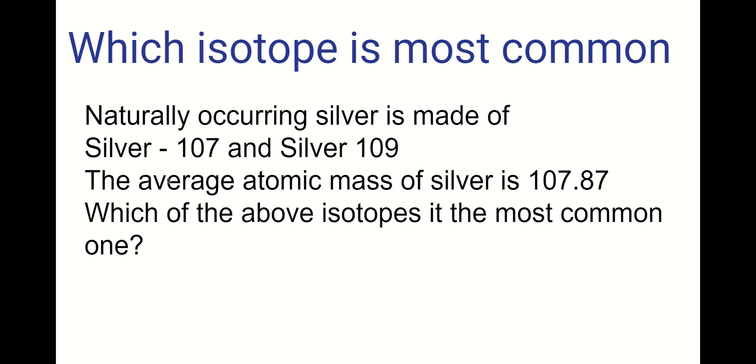Right. What about silver? So silver has two isotopes, silver 107 and silver 109. The average atomic mass of silver is 107.87. So which of the two isotopes above is the most common one?